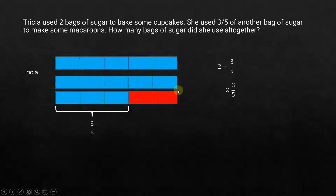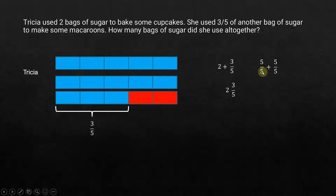Another way of looking at this: each whole bag can be divided into 5 parts, so we have 5 over 5 plus 5 over 5 plus 3 over 5. Each 5 over 5 is equal to 1 whole.